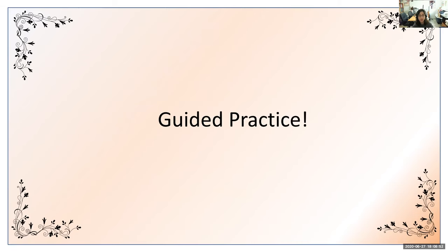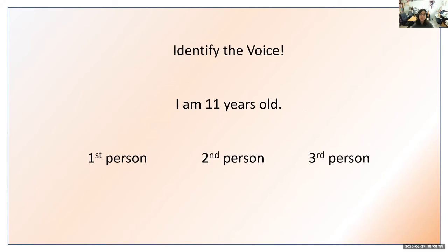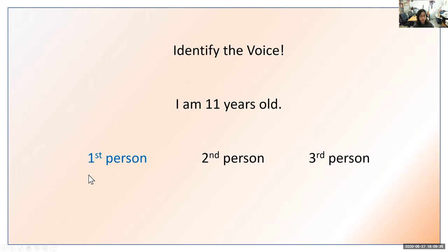We're going to go through some guided practice first. Identify the voice for the following passage: I am 11 years old. Would this be first person using pronouns I, my, mine, we — second person using you, your, yours, yourself — or third person using he, she, it, they? That one would be first person. We know because I is one of the pronouns that goes with first person.